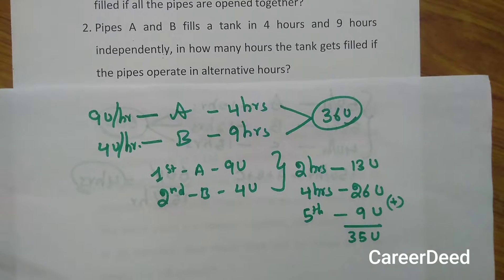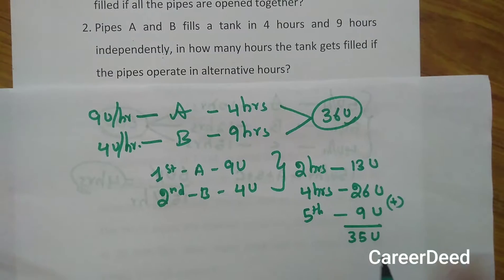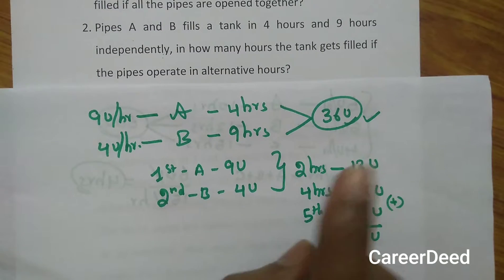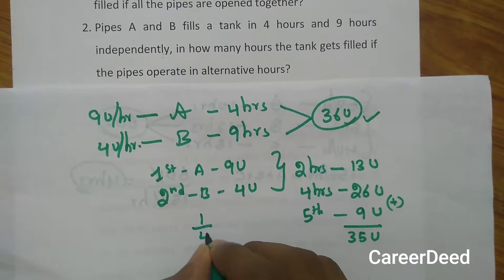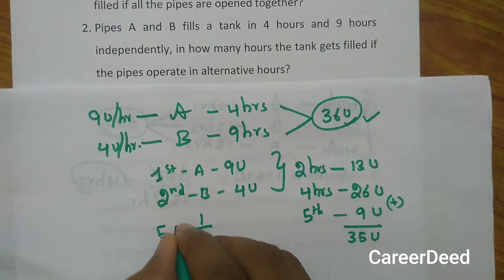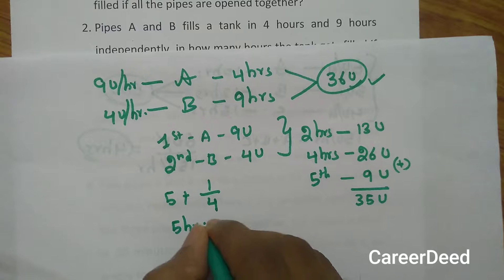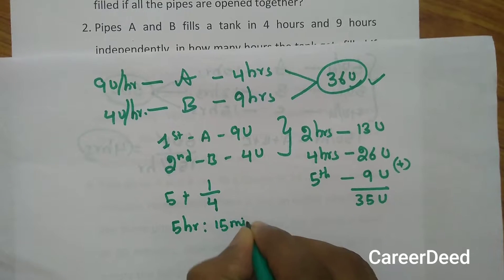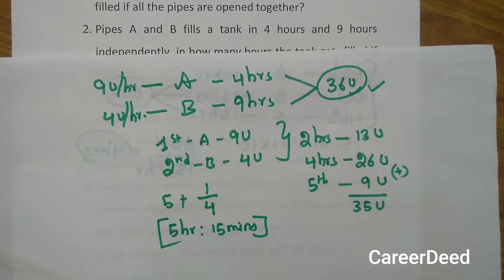We have only 1 unit remaining (36 − 35 = 1). In the 6th hour it is B's turn, but B does not need to work a full hour — B fills 4 units in 1 hour, so to fill 1 unit B needs only 1/4 hour. Therefore the total time is 5 complete hours plus 1/4 hour, which is 5 hours and 15 minutes.